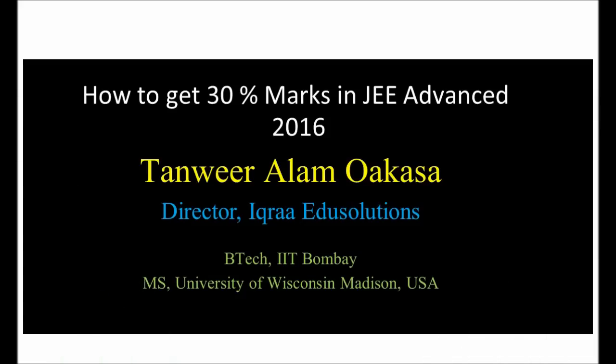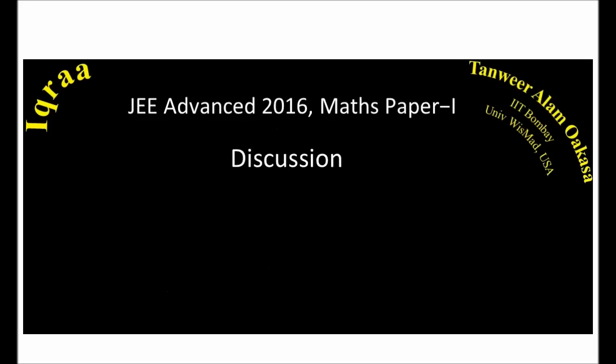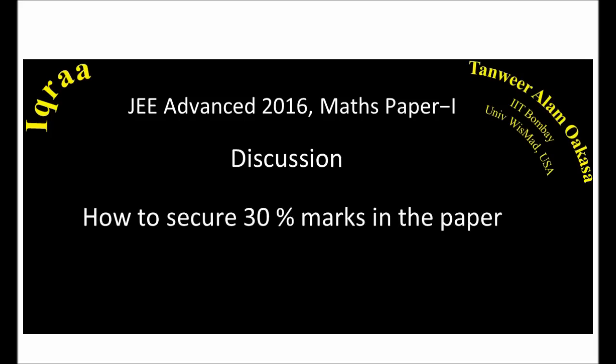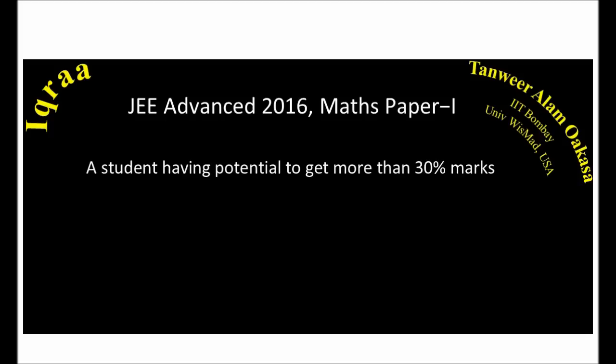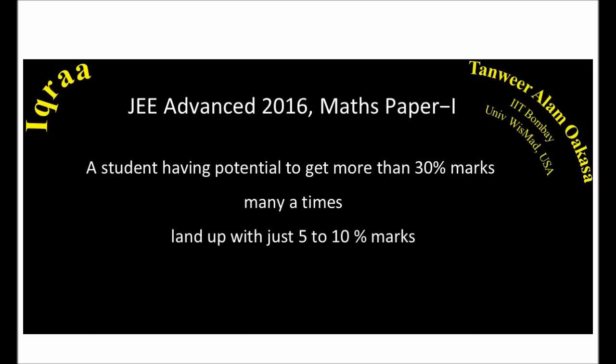Here I am to discuss the strategic planning to get 30% marks in JEE Advanced 2016. Normally, an official cutoff is 35% overall for IIT. But if a student scores high in chemistry or physics, then he needs to score at least 30% marks in maths. A student having potential to get more than 30% marks many a times ends up with just 5-10% marks. But why? Why does it happen?